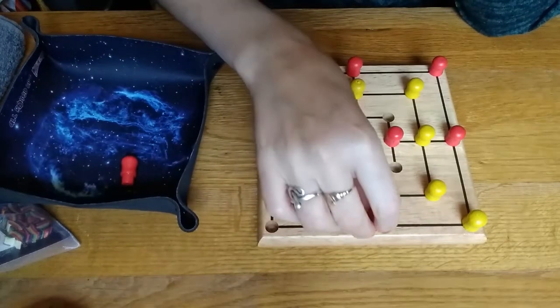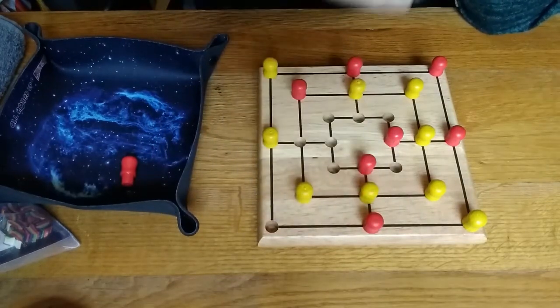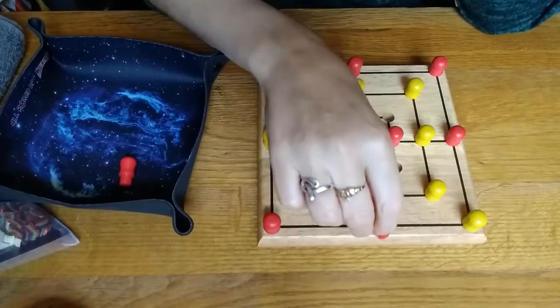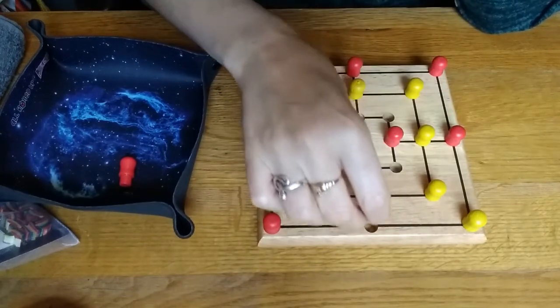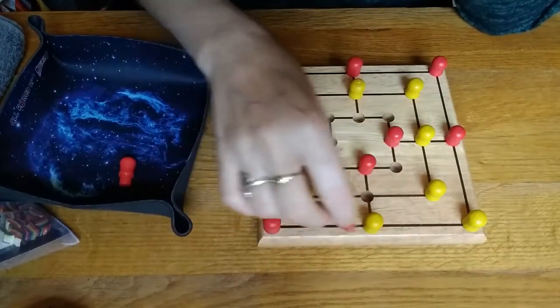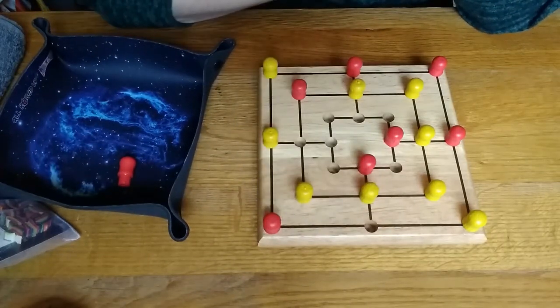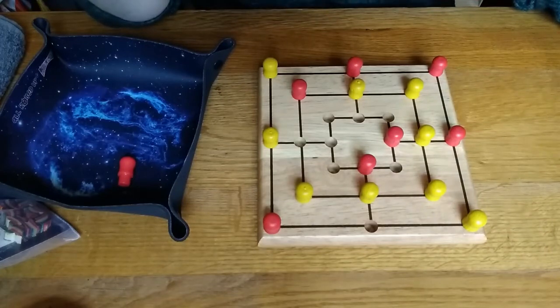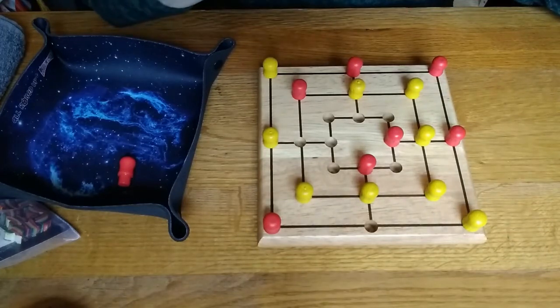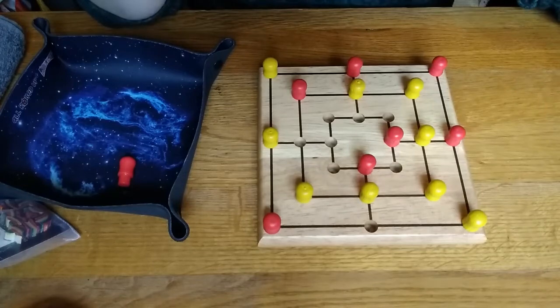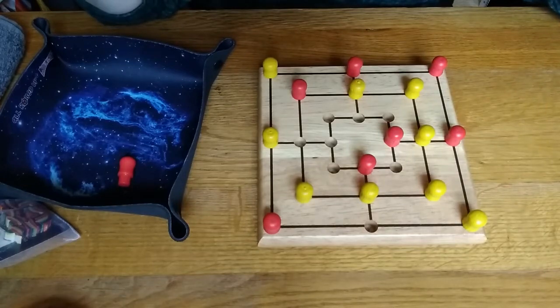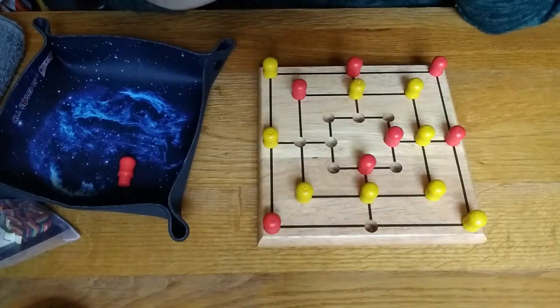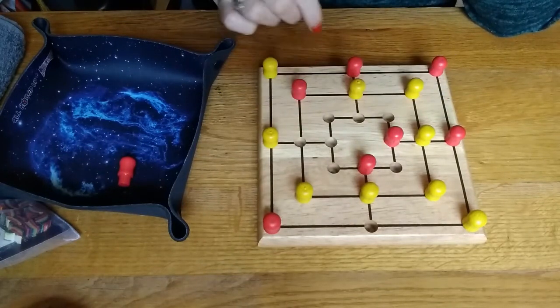Next turn, red is going to block yellow in. Because if they don't, yellow will just simply move from here to here and keep making that mill. Now, some people play that you can't do that rule. But like with all traditional games, you get that variety of house rules and things passed on by word of mouth. So it's really up to you to clarify that before you start playing. But we always play that that is acceptable. It just makes it harder then.